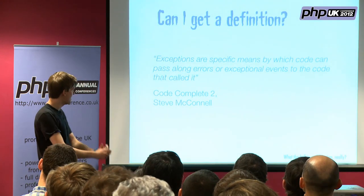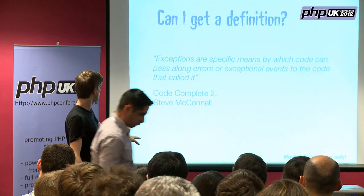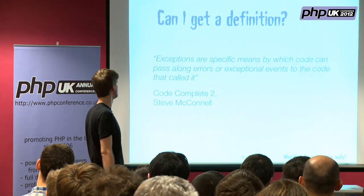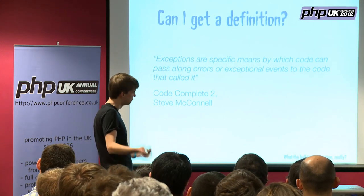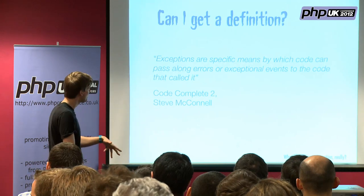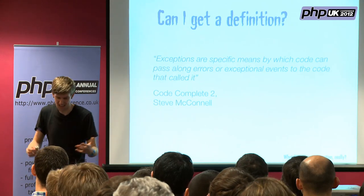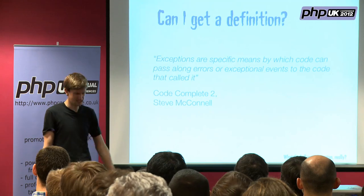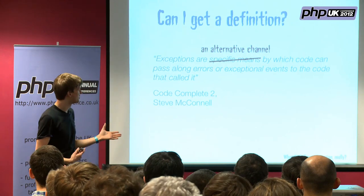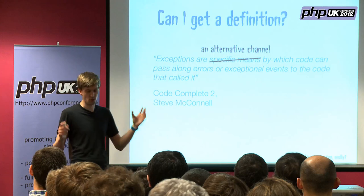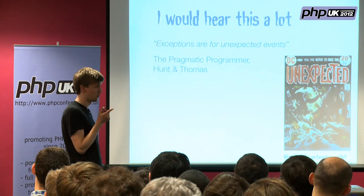Steve McConnell says: 'Exceptions are a specific means by which code can pass along errors or exceptional events to the code that called it.' The old me read that and went 'meh.' The phrase 'specific means' doesn't really clarify things. But using our newfound knowledge — substitute 'alternative channel' — and suddenly it makes a bit more sense.